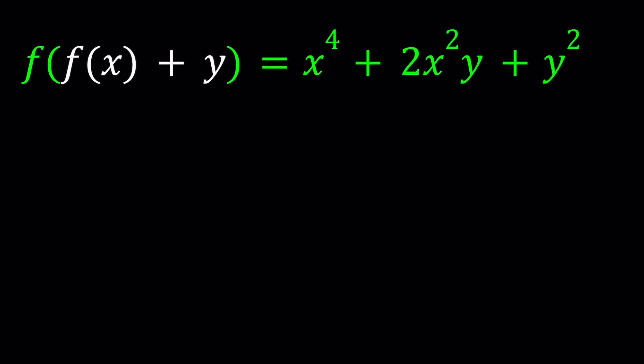Hello everyone, in this video we're going to be solving a homemade functional equation. We have f of f of x plus y equals x to the fourth power plus 2x squared y plus y squared. This is from reals to reals, so for x and y values that are real, this equation is true.